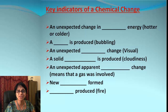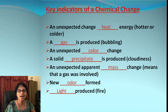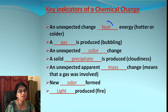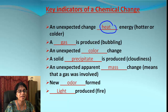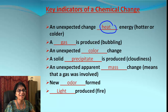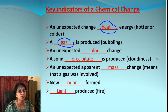Now there are some important key indicators which will tell us if a chemical reaction really took place or not. First of all, an unexpected change in heat energy is observed — either the test tube or flask will get hotter or it will get colder. That's an indication of a chemical reaction.